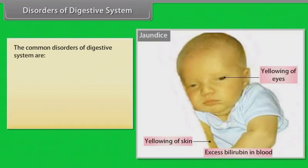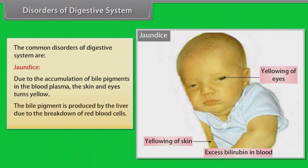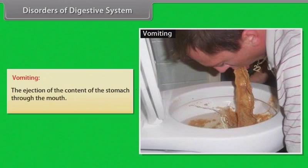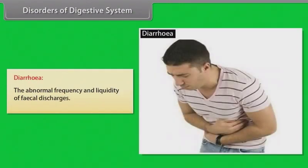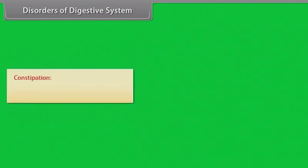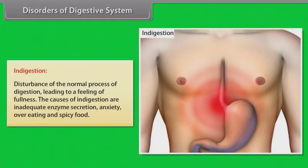Common disorders of the digestive system include: jaundice, where accumulation of bile pigments in the blood plasma causes the skin and eyes to turn yellow, due to breakdown of red blood cells; vomiting, the ejection of stomach contents through the mouth; diarrhea, abnormal frequency and liquidity of faecal discharges; constipation, difficult evacuation of faecal matter; and indigestion, a disturbance of normal digestion causing a feeling of fullness, caused by inadequate enzyme secretion, anxiety, overeating, or spicy food.